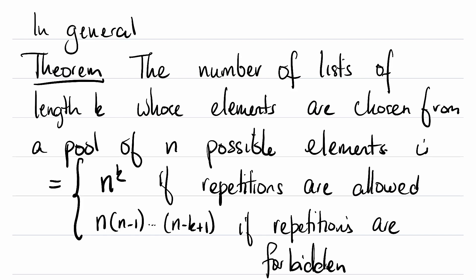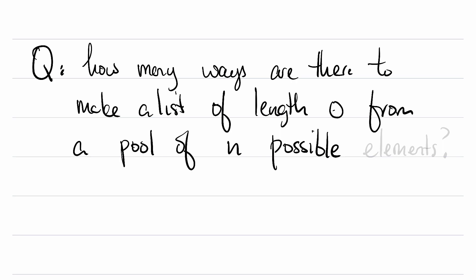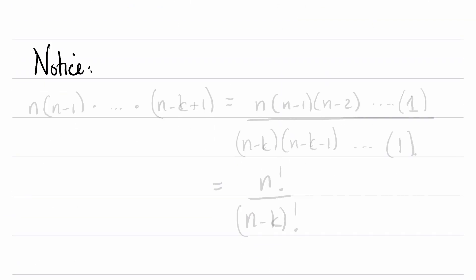Here's a question calling back to the last class: How many ways are there to make a list of length 0 from a pool of n possible elements? Think about this.